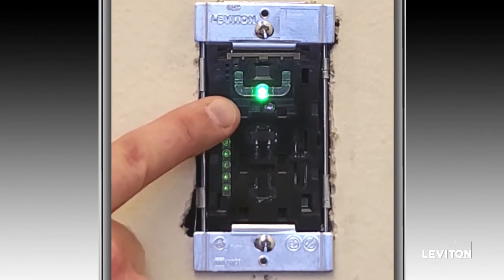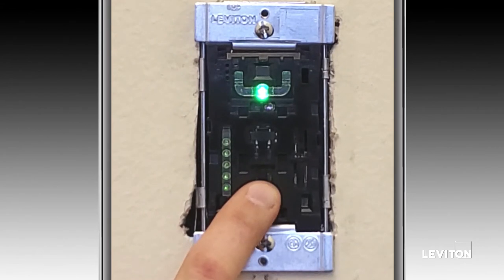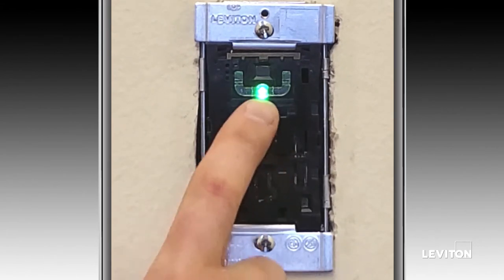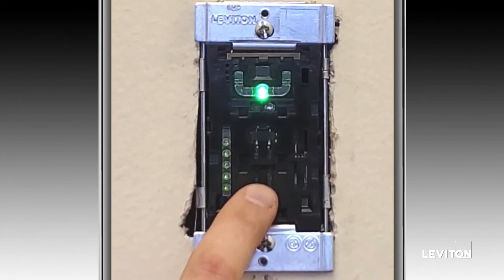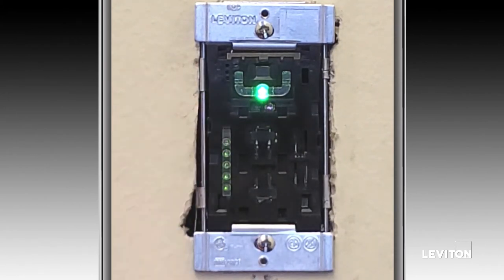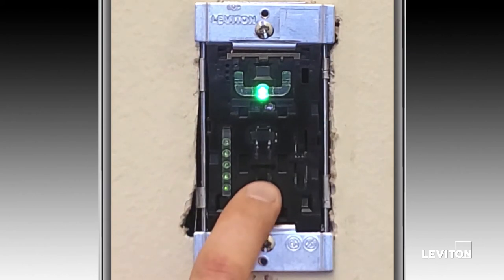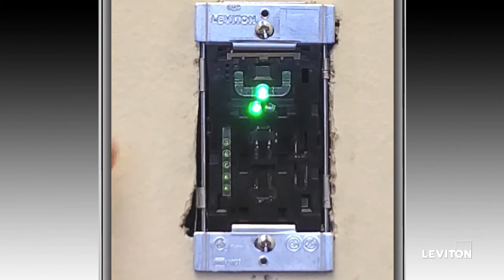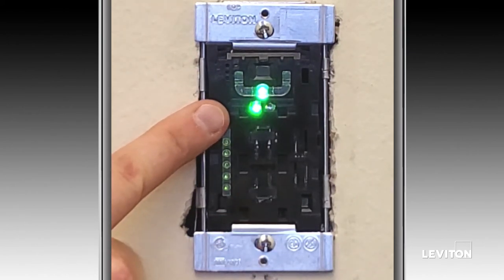Right now it's blinking once, so it's in mode one, and I'm going to hit the bottom button until I see it blink five times. I'll hit it again and you'll notice it blink twice, meaning it's now in mode two. I can hit it three more times and it should now blink five times.